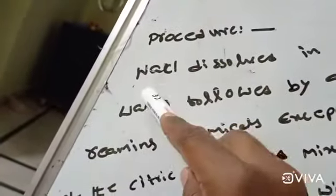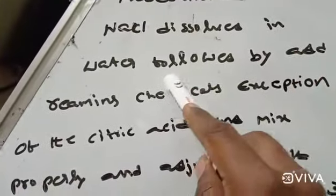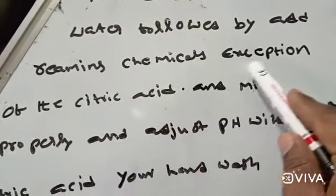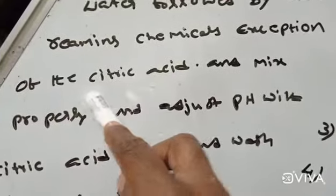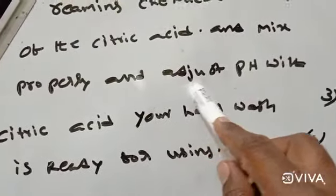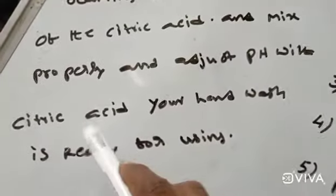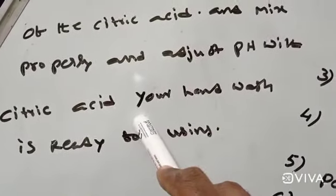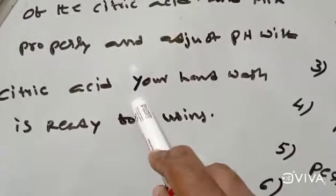Add citric acid and mix properly, then adjust pH to 6.5 to 7. Mix properly and your hand wash is ready for using.